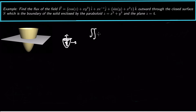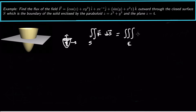The divergence theorem says that the flux — the double integral of F · dS over the surface S — is equal to the triple integral over the region enclosed by the surface of the divergence of F. So we take the divergence of F and integrate it over the enclosed region.